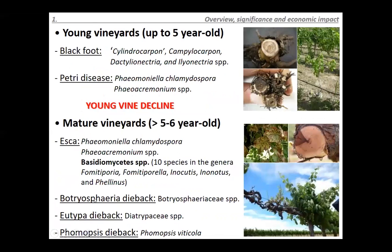Grapevine trunk diseases can be divided into two main groups: those affecting young vineyards and those affecting mature vineyards. What counts as young or mature depends on the region — in a normal Mediterranean temperate climate, young would be up to five years old, whereas in British Columbia, young vines could be six, seven, or eight years old. Diseases affecting young vines are known as black foot and Petri disease.